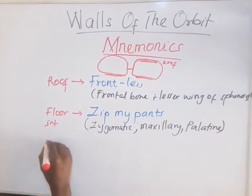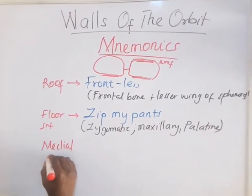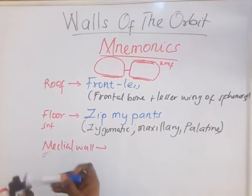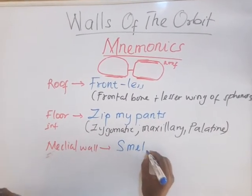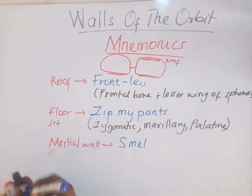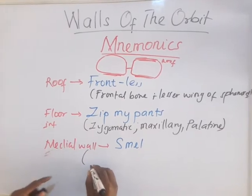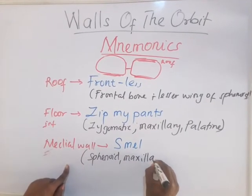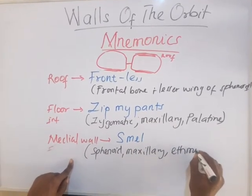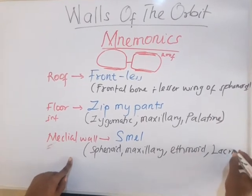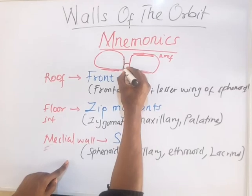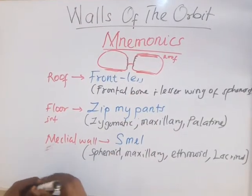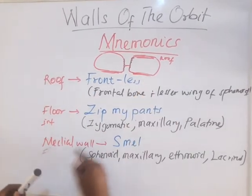Now for the medial wall — the wall close to the nose — the mnemonic is 'I SMELL.' S is for the sphenoid, M is for the maxillary, E is for the ethmoid, and L is for the lacrimal bone. So four bones form the medial wall of the orbit: sphenoid, maxillary, ethmoid, and lacrimal.